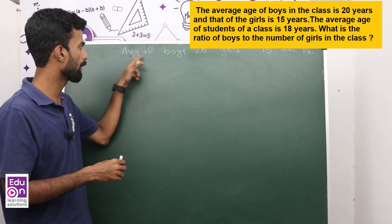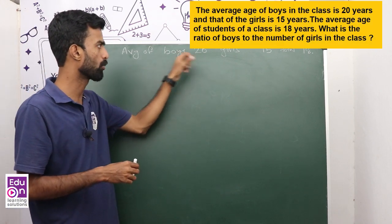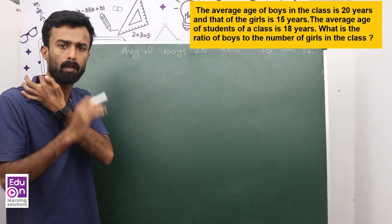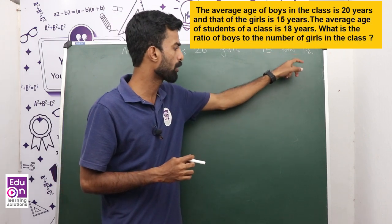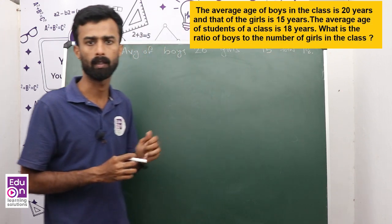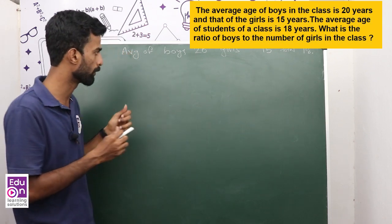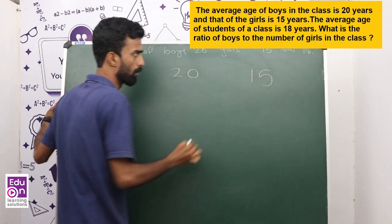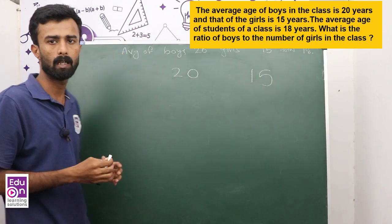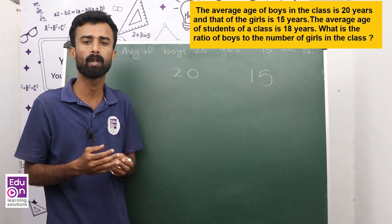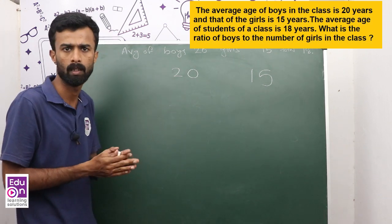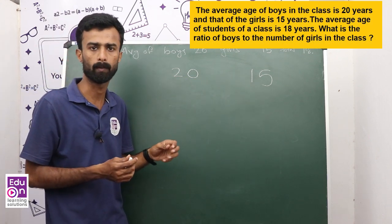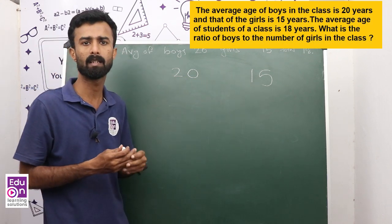First question: the average age of boys in the class is 20, and the average age of girls in the class is 15. The total average age of all students in the class is 18. So if you have two values, this is the average age of two values. This is how we should study the question.